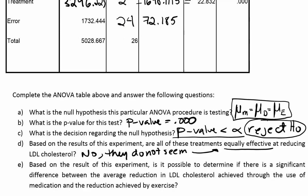Part E asks whether we can determine if there's a significant difference between the average LDL reduction achieved through medication versus exercise. Normally, to distinguish between specific treatment means, we need to perform a multiple comparison procedure, which is covered in the next section. Let's look at the original data to see if we can reason about it.